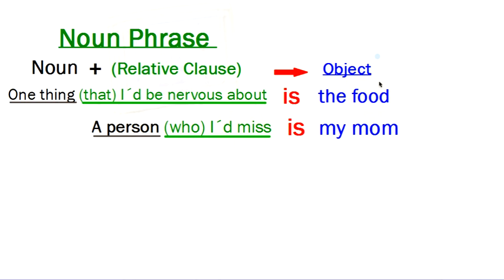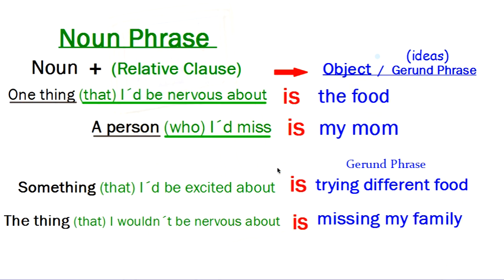Okay, now I want to show you something. When I say the object of a sentence, I can often use a gerund phrase. Now, a gerund phrase, remember, is an ing verb. And a lot of times we use those verbs like a noun. They are ideas, right? So, for example, if we look at this sentence, it says, Something that I'd be excited about is trying different food.